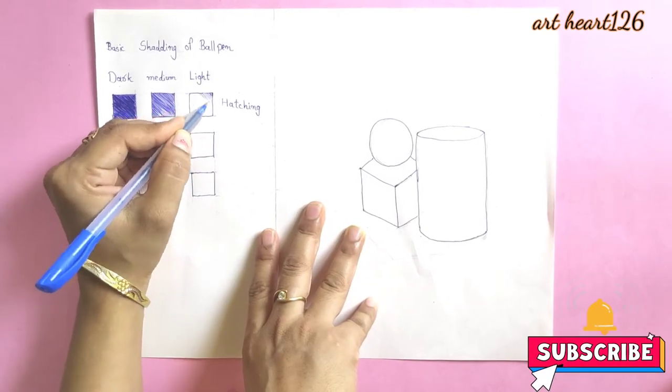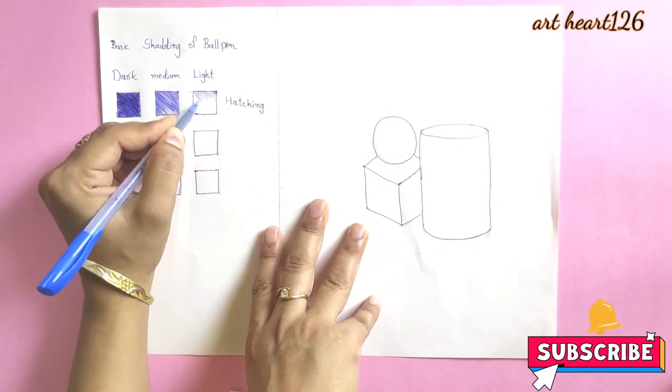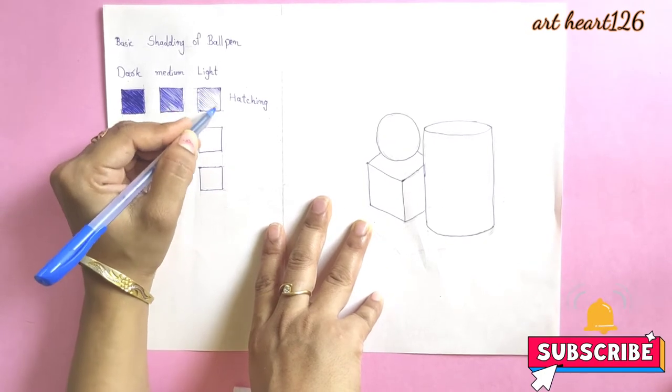For doing light tone, draw cross lines at a space without giving any pressure on the pen.